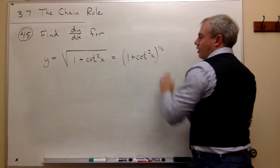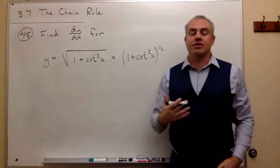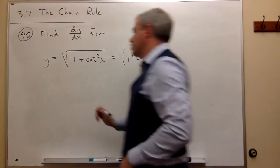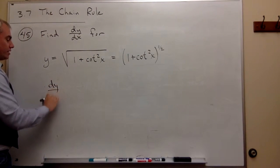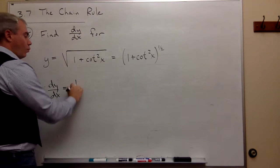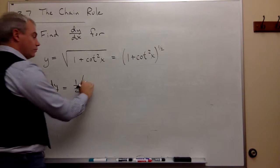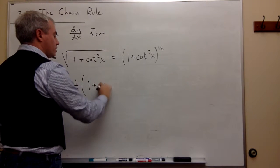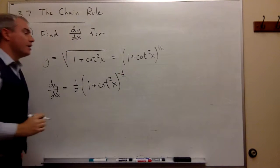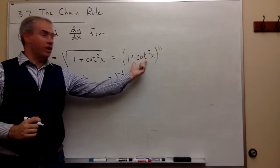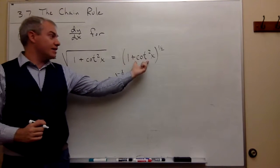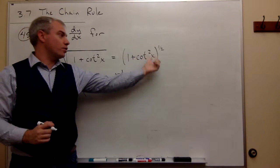So I've got something to the one-half power. To take the derivative dy/dx of something to the one-half power, it would be one-half of something — that's 1 plus cotangent squared of x — to the negative one-half power, times the derivative of what was on the inside, the something. So what's on the inside? It's 1 plus cotangent squared of x.